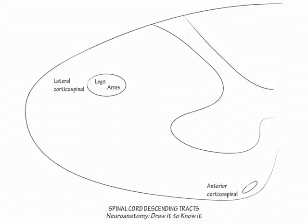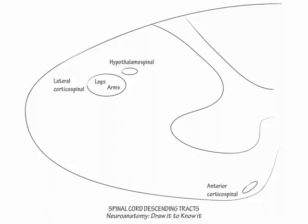Next, label the hypothalamospinal tract alongside the lateral corticospinal tract in the lateral funiculus. This tract carries hypothalamic input for visceral motor activities, such as sympathetic-mediated eye changes, as well as bowel, bladder, and sexual functions. Injury to the hypothalamospinal tract at the cervical level results in Horner syndrome.